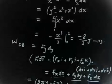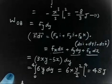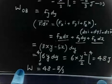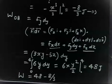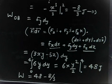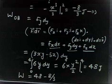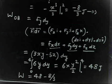Initially we have -8/3 joules of work done along OA, and 48 joules along AB. So the total work done is 48 - 8/3, which equals 48 - 8/3 joules. This is the total work done along the path O to A to B.